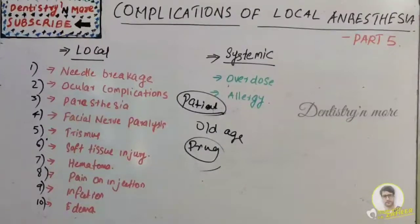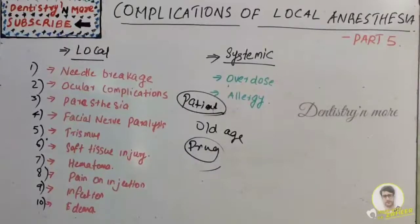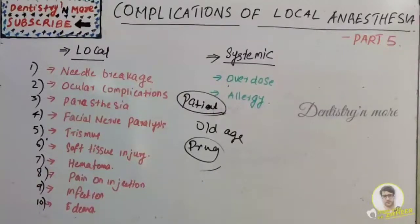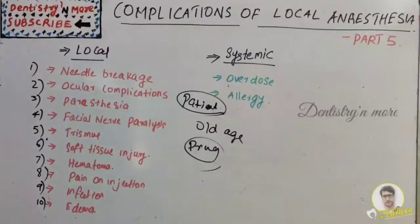Clinical manifestations of overdose include apprehension, slurred speech, excitability, sweating, vomiting, failure to follow commands, elevated blood pressure, heart rate and respiratory rate, chances of tonic-clonic seizure, CNS depression, myocardial depression, and cardiac arrest.